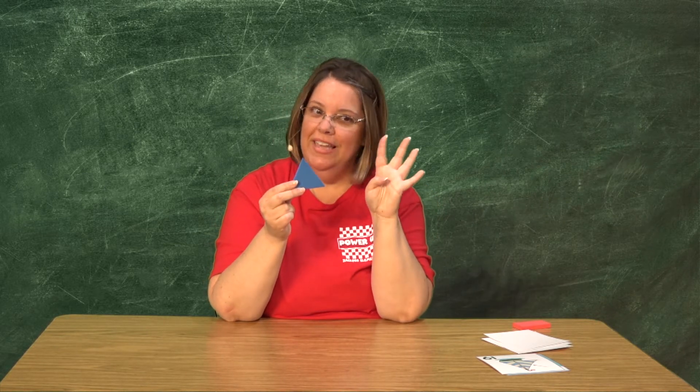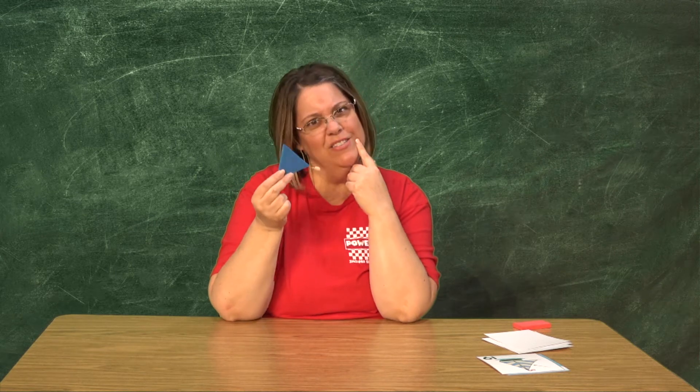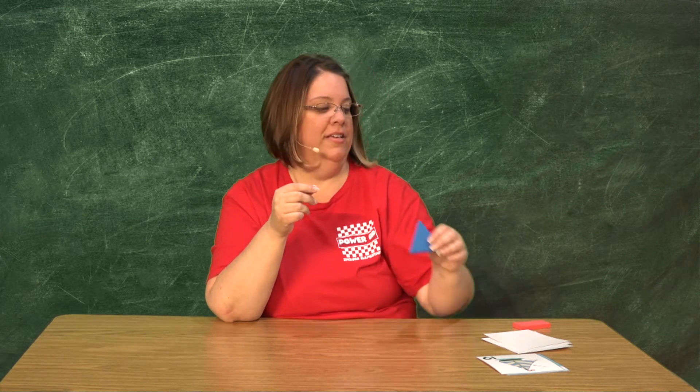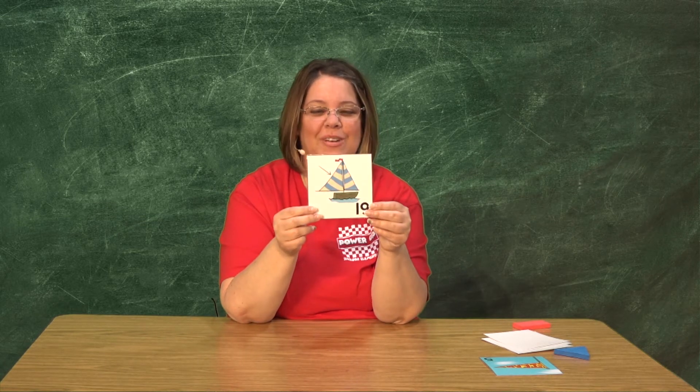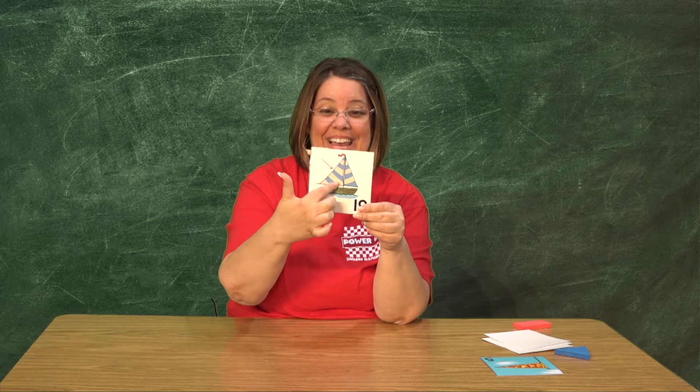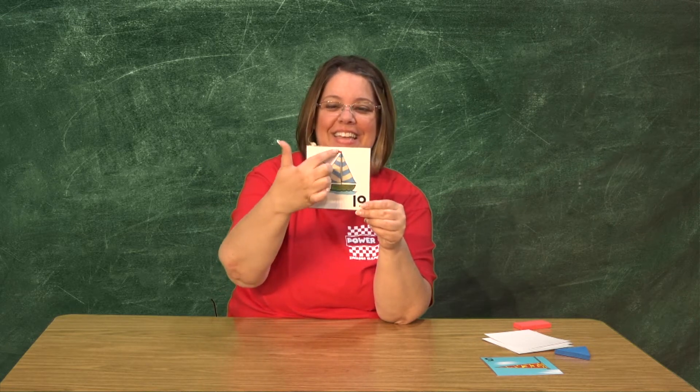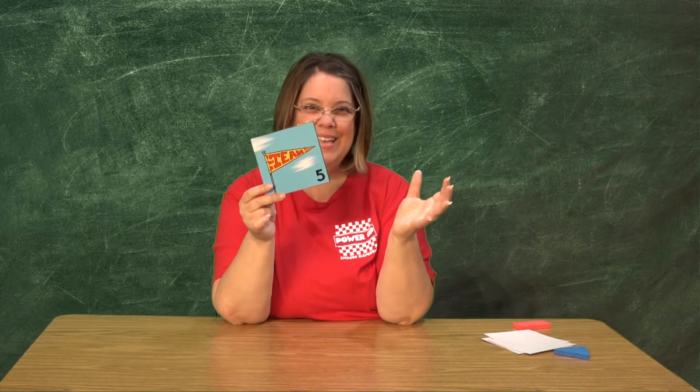Y el rectángulo tenía cuatro lados y cuatro esquinas. ¿Han visto un triángulo en su casa, o en la escuela, o quizás afuera? Pues yo tengo unos dibujos que muestran el triángulo. Tengo un barco, y en el barco está una vela. Y la vela es la figura triángulo, porque tiene tres puntitas o tres esquinas y tres líneas o tres lados para formar un triángulo.